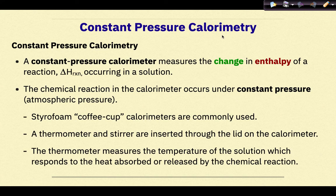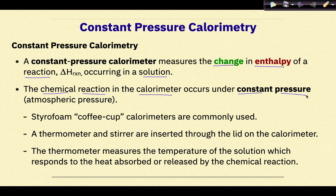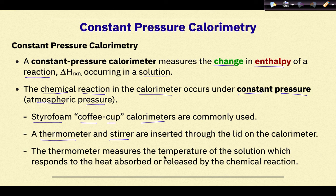A constant pressure calorimeter measures the change in the enthalpy of a reaction, which we represent as delta H reaction, occurring in a solution. The chemical reaction in the calorimeter occurs under constant pressure, so atmospheric pressure. Typically styrofoam coffee cup calorimeters are used. A thermometer and a stirrer are inserted through the lid in the calorimeter. The thermometer measures the temperature of the solution, which responds to the heat either absorbed or released by the chemical reaction that occurs within the calorimeter.